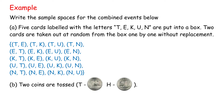B. Two coins are tossed. T represents tails and H represents heads. Solution: The sample space is {TT, TH, HT, HH}.